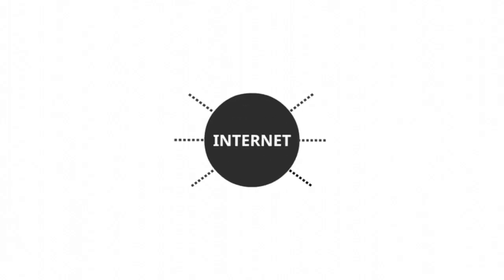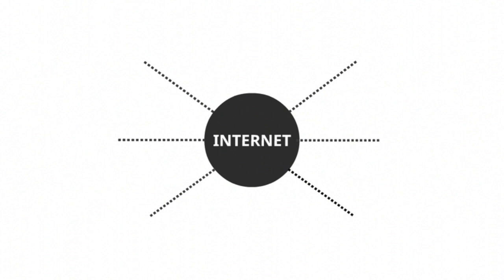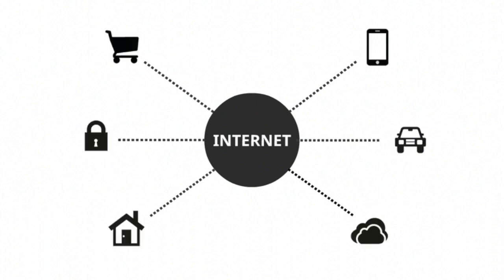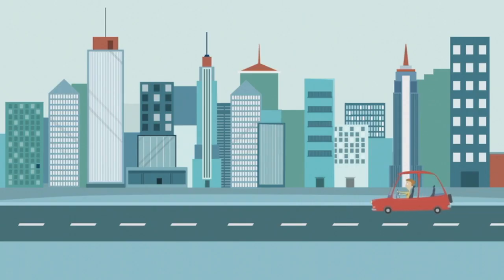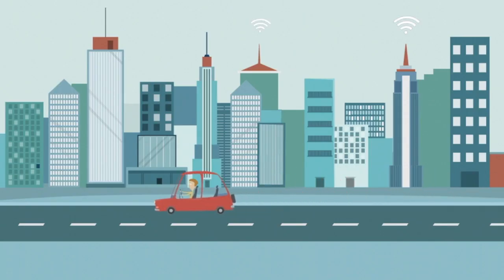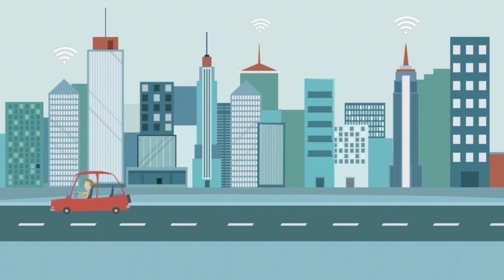The internet of things, commonly referred to as IOT, refers to all of the devices connected to the internet that collect data on physical parameters and processes and report these back to the network. Some then provide outputs that can control other equipment and systems.